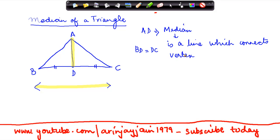What is the vertex? Vertex is this point. So vertex in this particular case is A, B and C. Median is a line which connects vertex of a triangle to the midpoint of the opposite side.